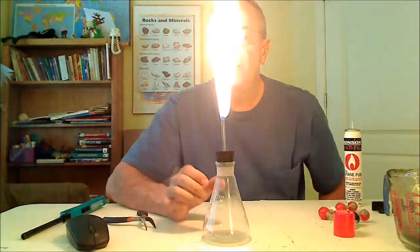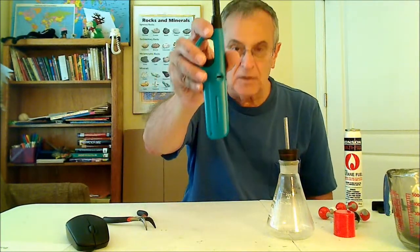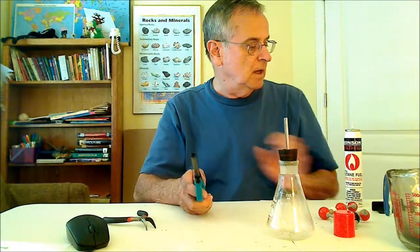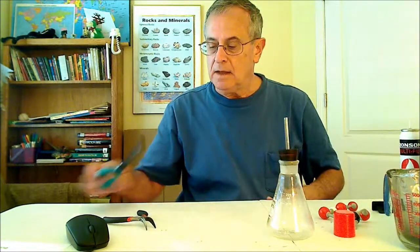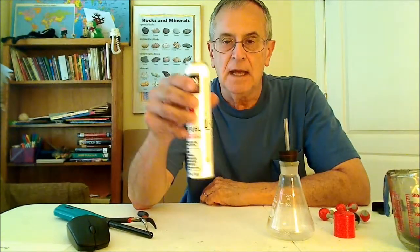So butane is a nice portable fuel because it doesn't have a very high vapor pressure. It is easily contained. You can use it to ignite your grill or if you smoke, a cigarette lighter might be a butane lighter. It's a very nice portable fuel. It's a gas at room temperature. One atmosphere of pressure will be a gas, but if you pressurize it to two atmospheres, it will condense.